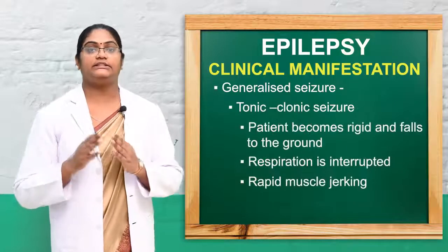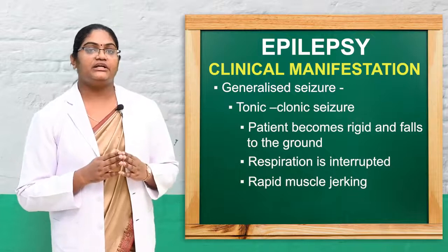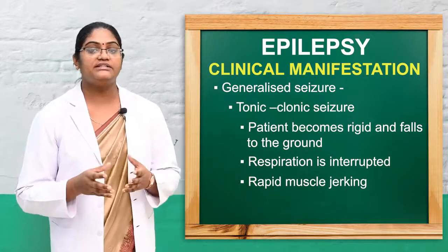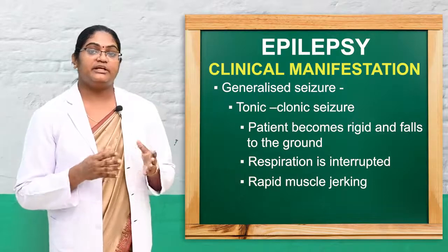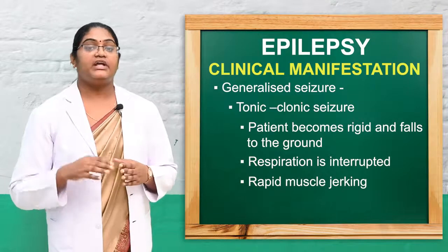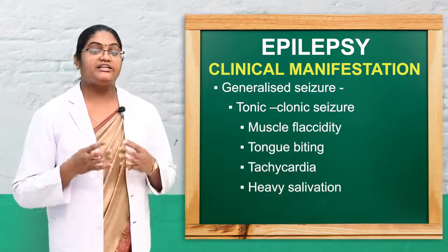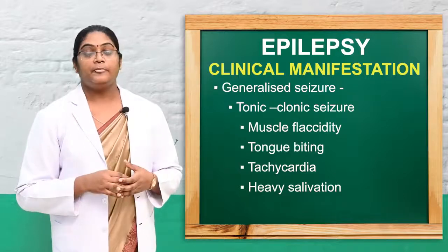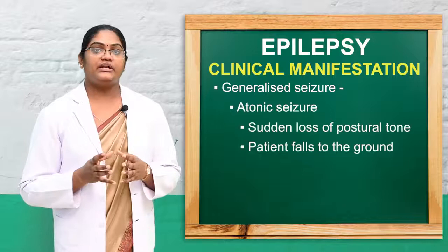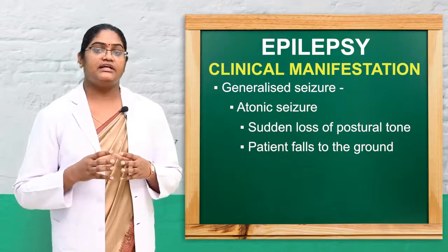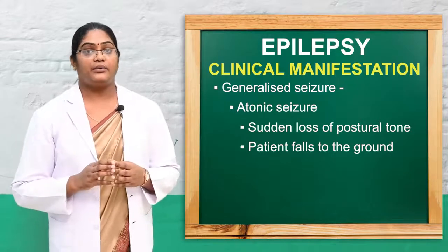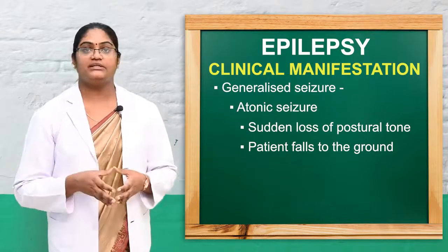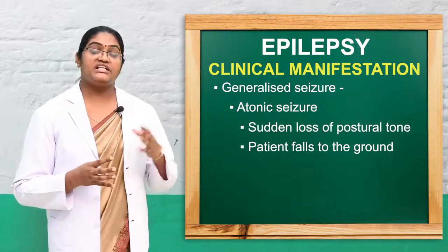In tonic-clonic seizure, the patient has sudden loss of consciousness. In the tonic stage, the patient becomes rigid, falls to the ground, and respiration is interrupted. In the clonic stage, there is rapid muscle jerking, muscle flaccidity, tongue biting, and confusion. The last subtype is atonic seizure, also known as drop attack, where there is sudden loss of consciousness and falling to the ground — seen mostly in children.